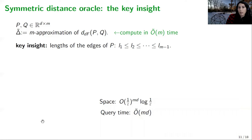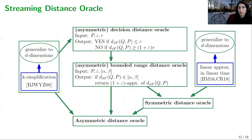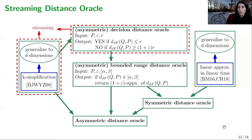Now let's consider the streaming scenario. Here the curve p is given as a stream, and again we want the space usage to be independent of the length of the stream. There are two components that need to work on a stream: the decision distance oracle and the simplification algorithm. I want to give you some idea of how we make our decision distance oracle work in the streaming scenario.